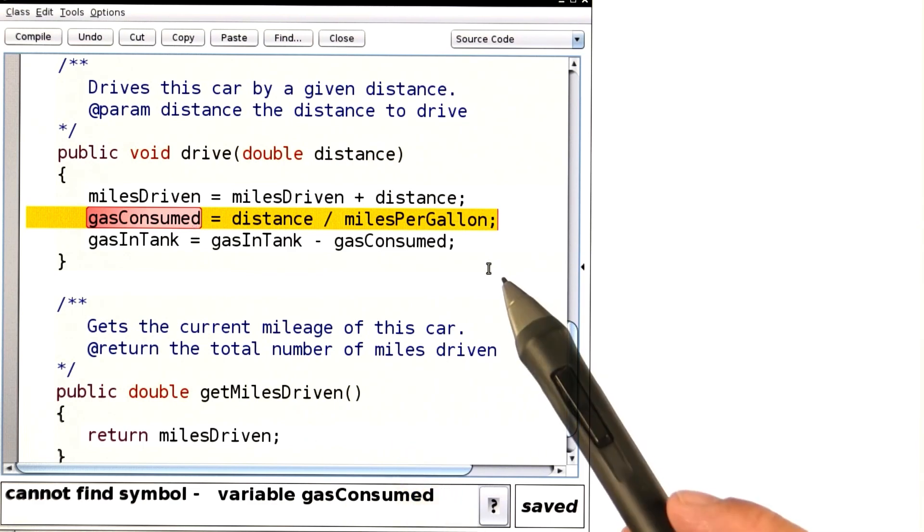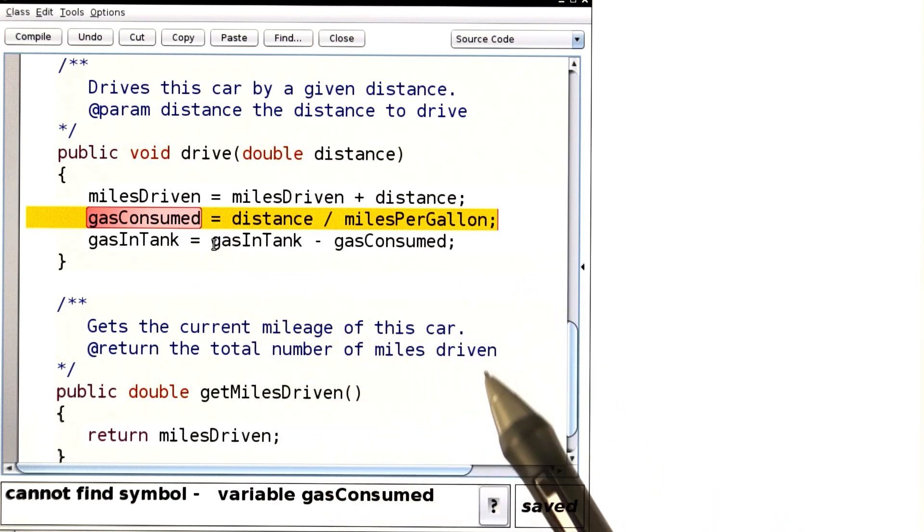Now, it's a common error to say, oh, it can't find it, so let me just make another instance variable.